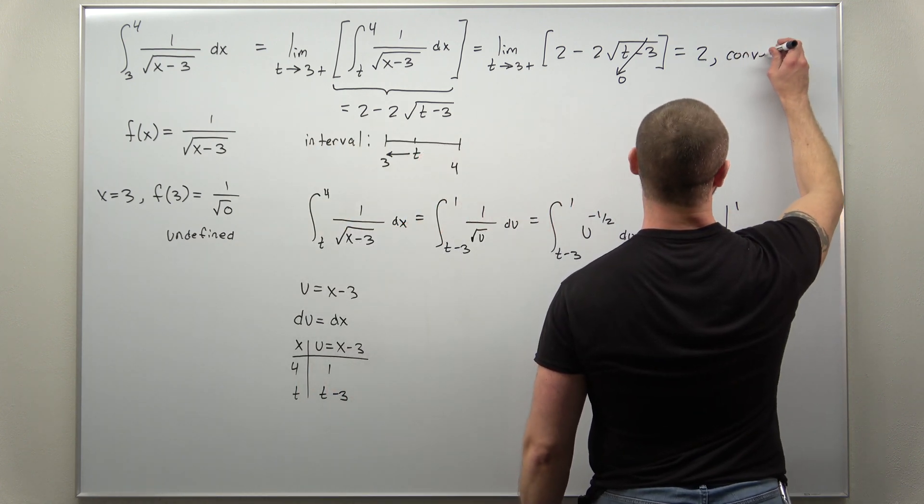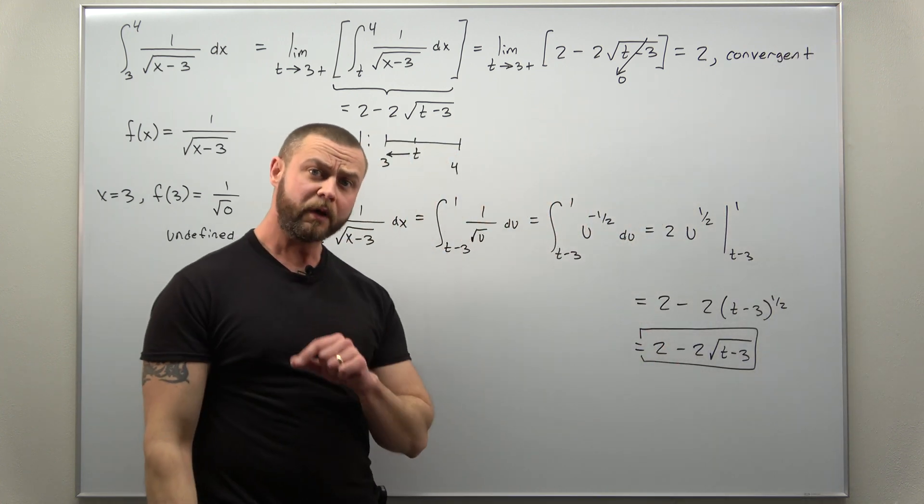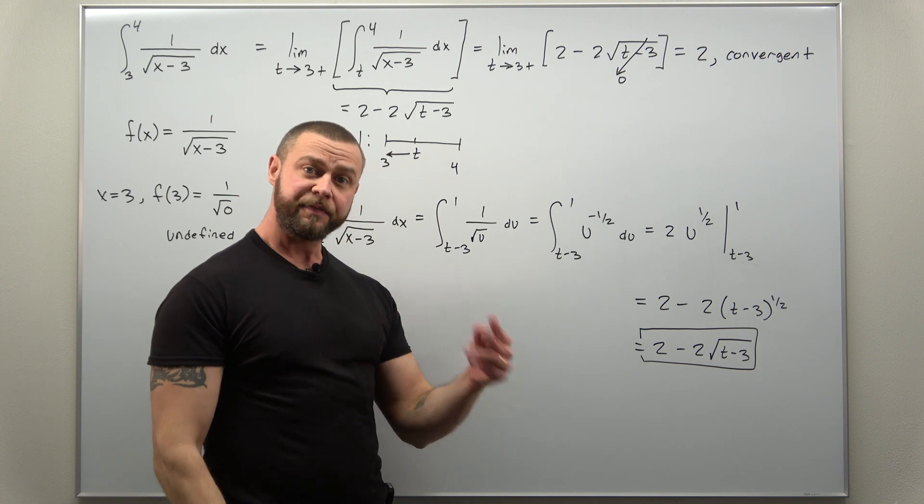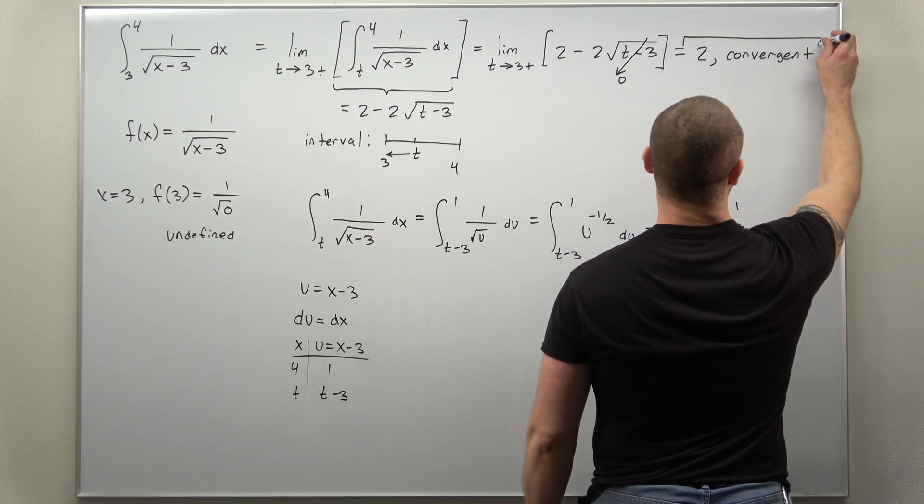So the fact that the limit exists tells us our improper integral is convergent, and more importantly, the value that we get for the limit, that's what the improper integral converges to.